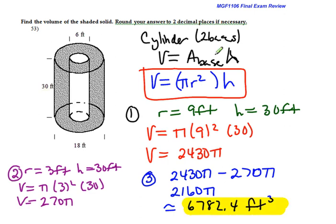First step, volume of the outside cylinder, which is here in red. Second step, volume of the inside cylinder. Last step, subtract the two, and round if necessary.